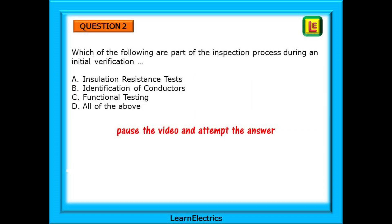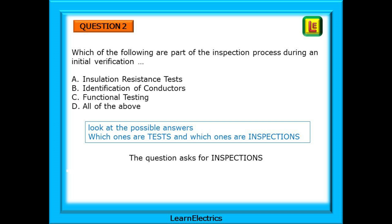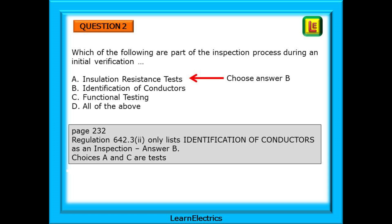Moving on to question 2: which of the following are part of the inspection process during an initial verification? Four potential answers where only one is correct. Look at the possible answers — which ones are tests and which ones are inspections? The question is asking about inspections. Initial verification, as mentioned in the question, is chapter 64. On page 232 we will find Regulation 642.3 indent 2. Only identification of conductors is an inspection — we can look and inspect to see if there are the correct colours or numbers. Choose answer B. Choices A and C are tests and are not correct, and answer D does not apply in this case.